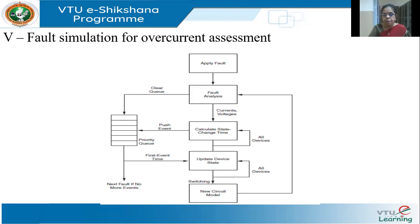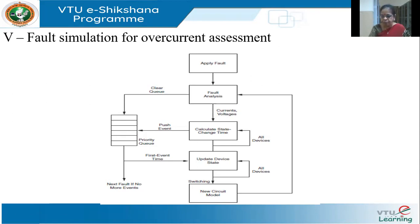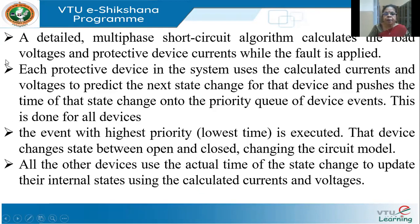An empty priority queue means only two things: either the fault is permanent — all auto-reclosures have been tried and the fault still exists — or the fault has been cleared. Like this, I do the simulation for all types of faults. A detailed multi-phase short circuit algorithm calculates the load voltages and protective device currents while the fault is applied. Then each protective device uses the calculated currents and voltages to predict the next state change and pushes the time of the state change onto the priority queue of events.